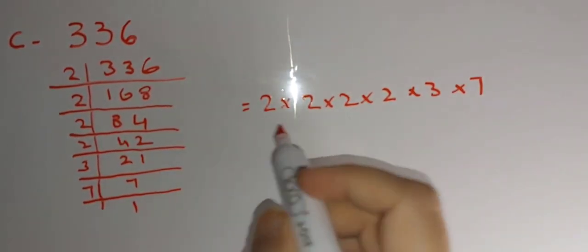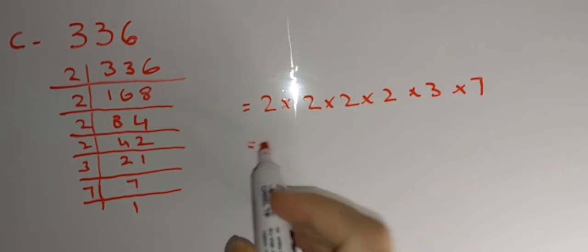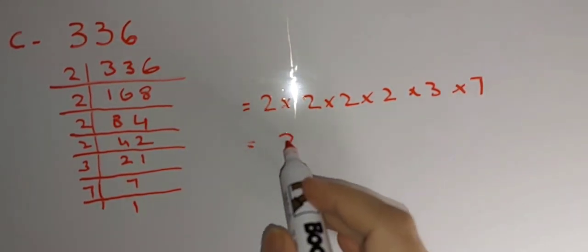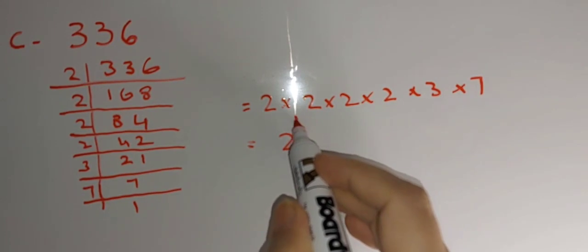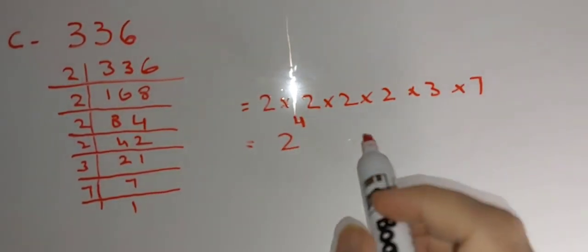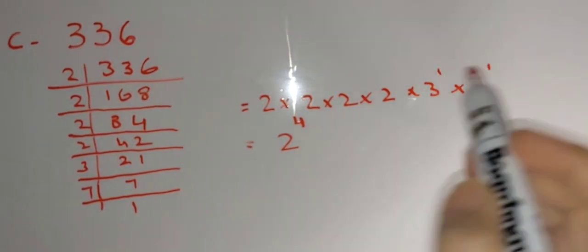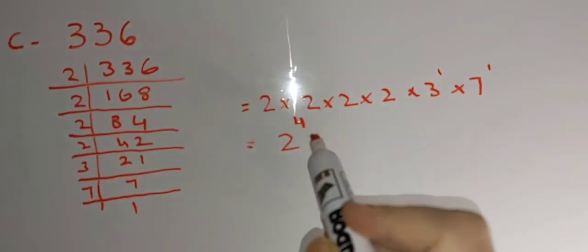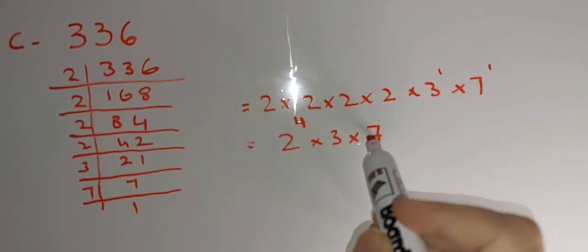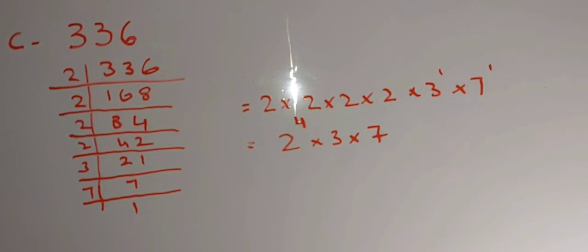Now we change these into index notation. Count how many 2's there are: 1, 2, 3, 4 — so 2 to the power 4. There is one 3 and one 7, so we need not write the index 1; we simply write 3 multiply by 7. The final answer is 2 to the power 4, multiply by 3, multiply by 7.